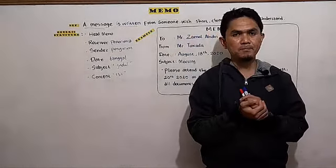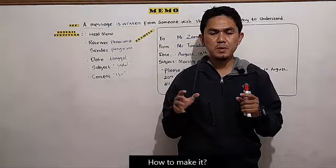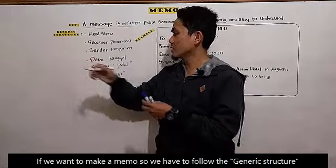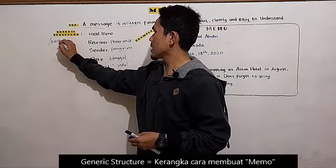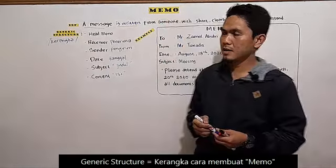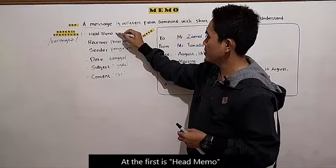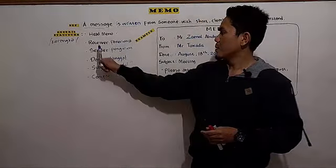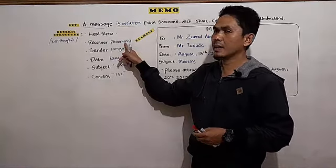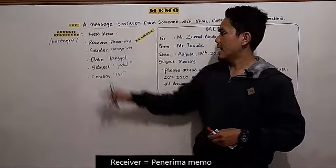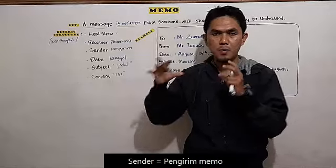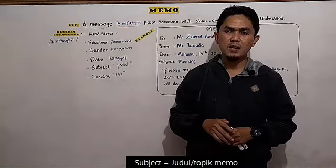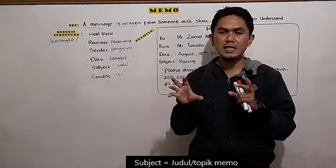How to make a memo? If we want to make a memo, we have to follow the generic structure. The first is the head memo — the title written as 'Memo'. Then the receiver, or penerima — the person receiving the memo. Then the sender, or pengirim — the person making the memo. Then the date, or tanggal — when the memo was made. And the subject, which is the title or main topic to be conveyed.